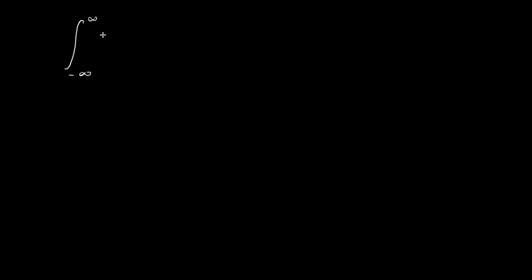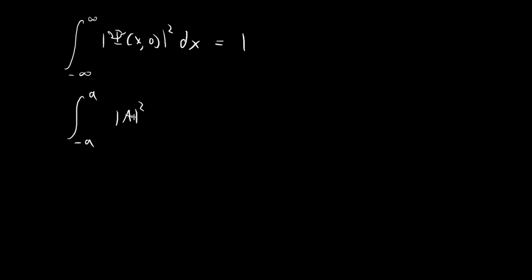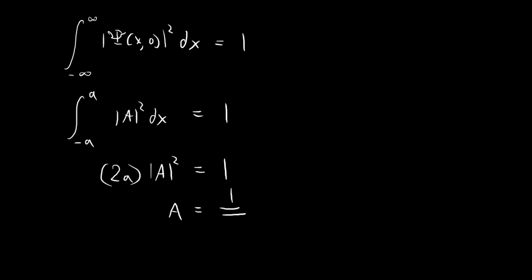This normalization integral should always be equal to one. Within the range negative infinity to negative a, the wave function is just zero. From negative a to positive a, the initial wave function is the absolute value squared of the constant A. From a to infinity, everything is zero. So integrating gives us 2a multiplied by the absolute value squared of capital A equal to one, which means A equals one over the square root of 2a.